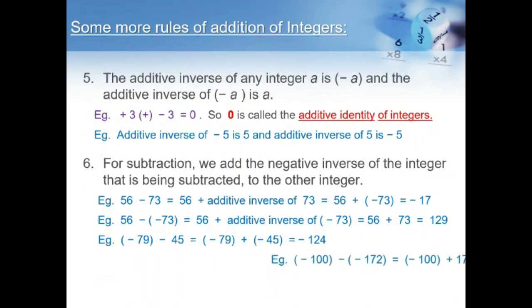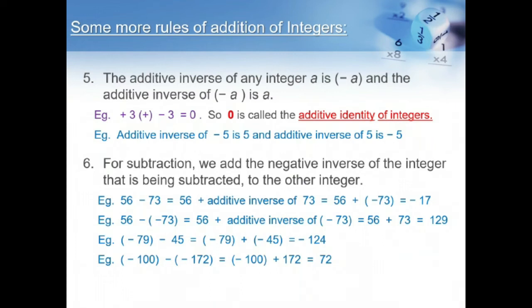The fourth example is minus 100 minus of minus 132. That means here we are taking two negative integers. And here, minus 100 plus 172 — since the additive inverse of minus 172 is 172 — we get 72, which is a positive integer. Here, minus 100 is a negative integer and 172 is a positive integer. Since 172 is greater than minus 100, we get a positive integer.